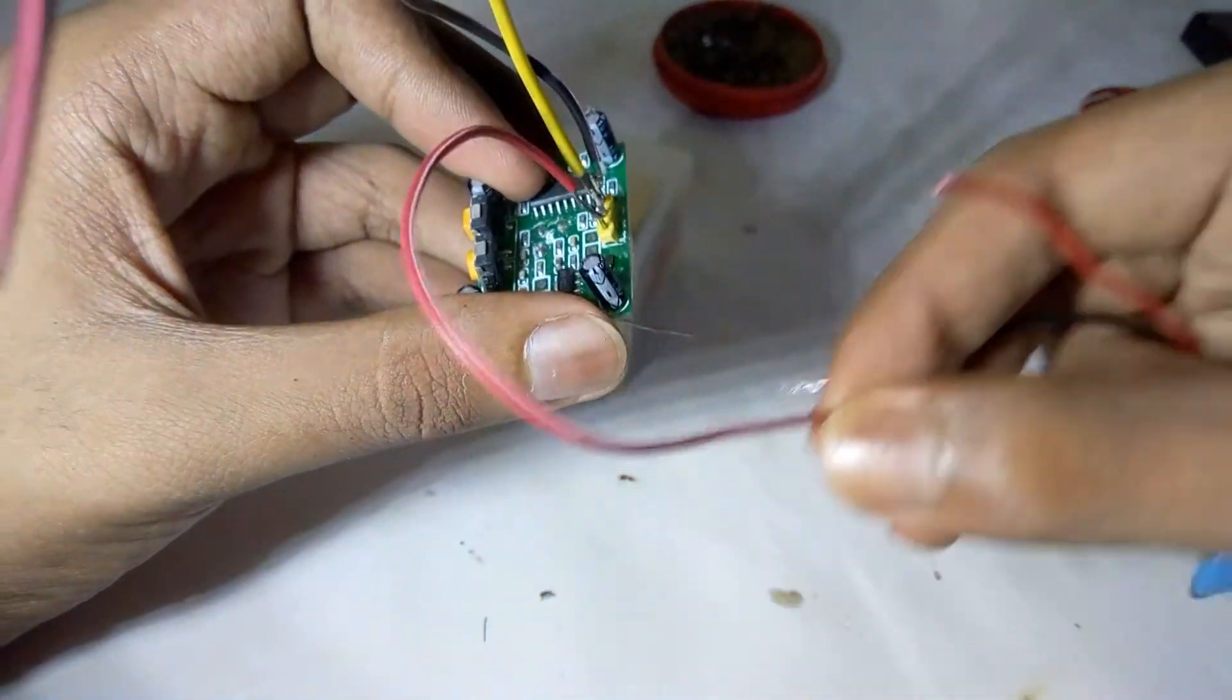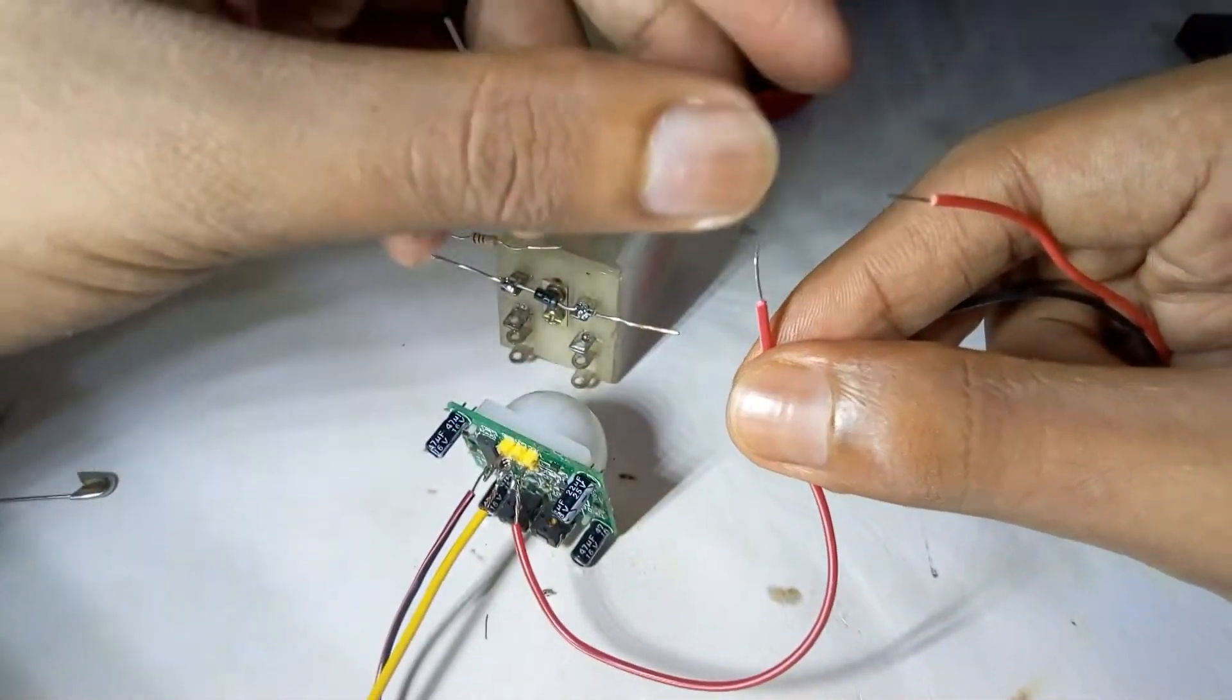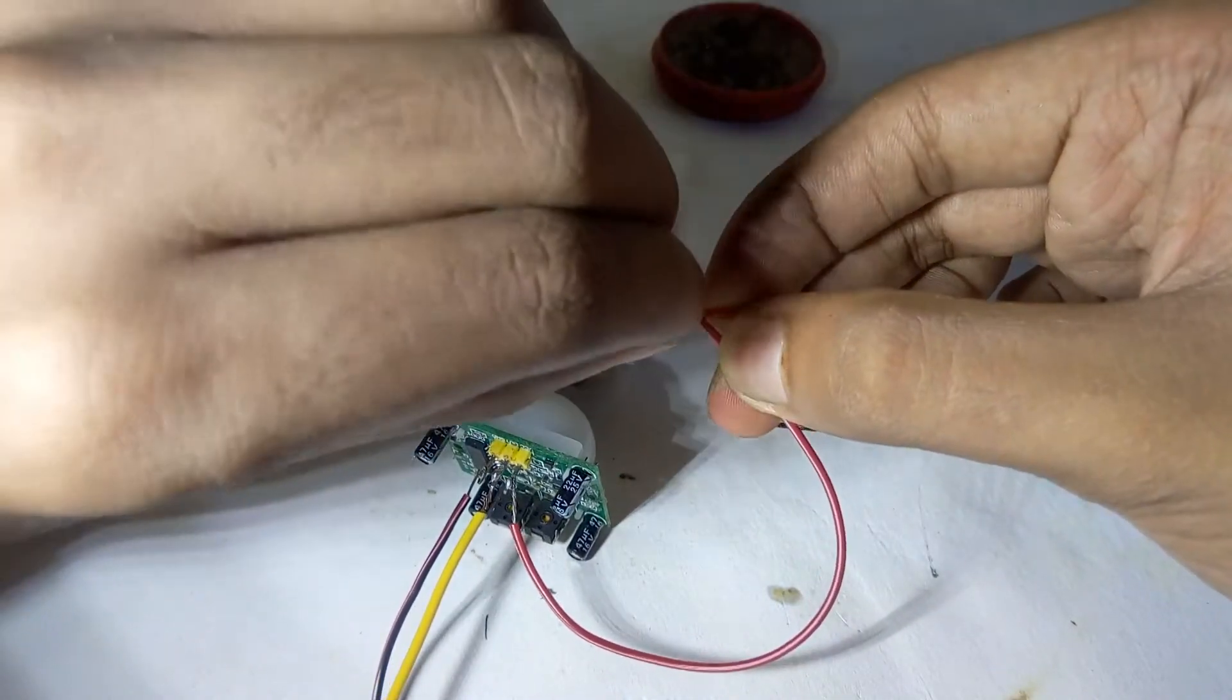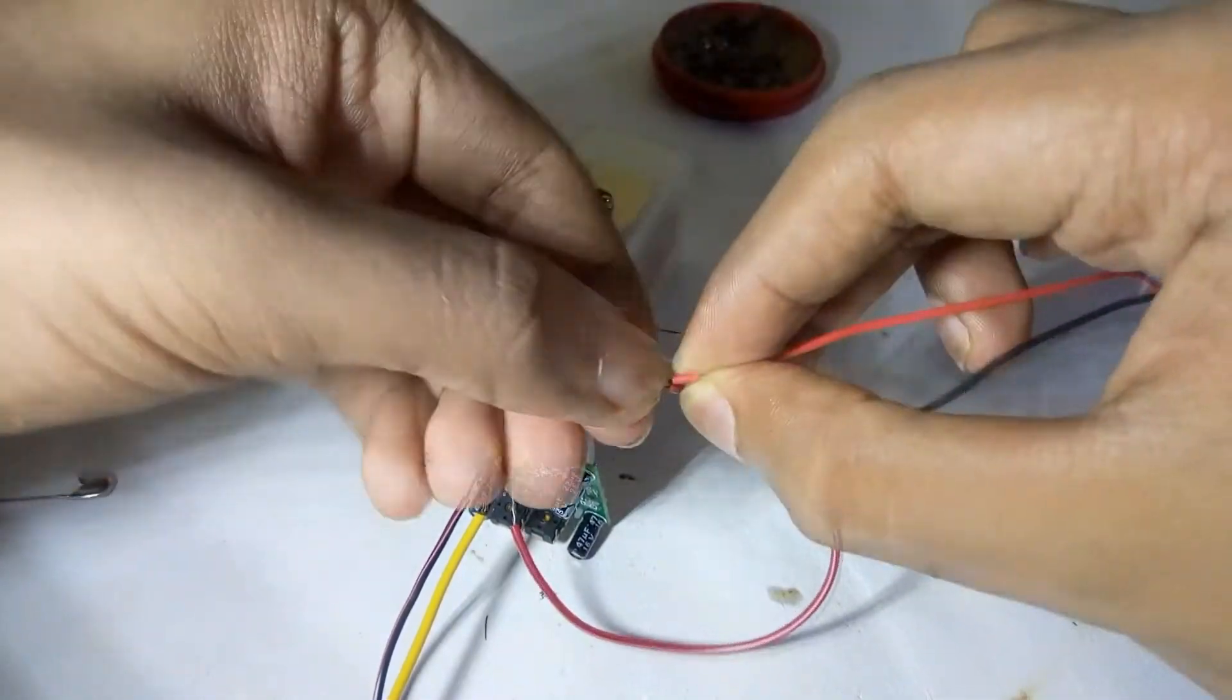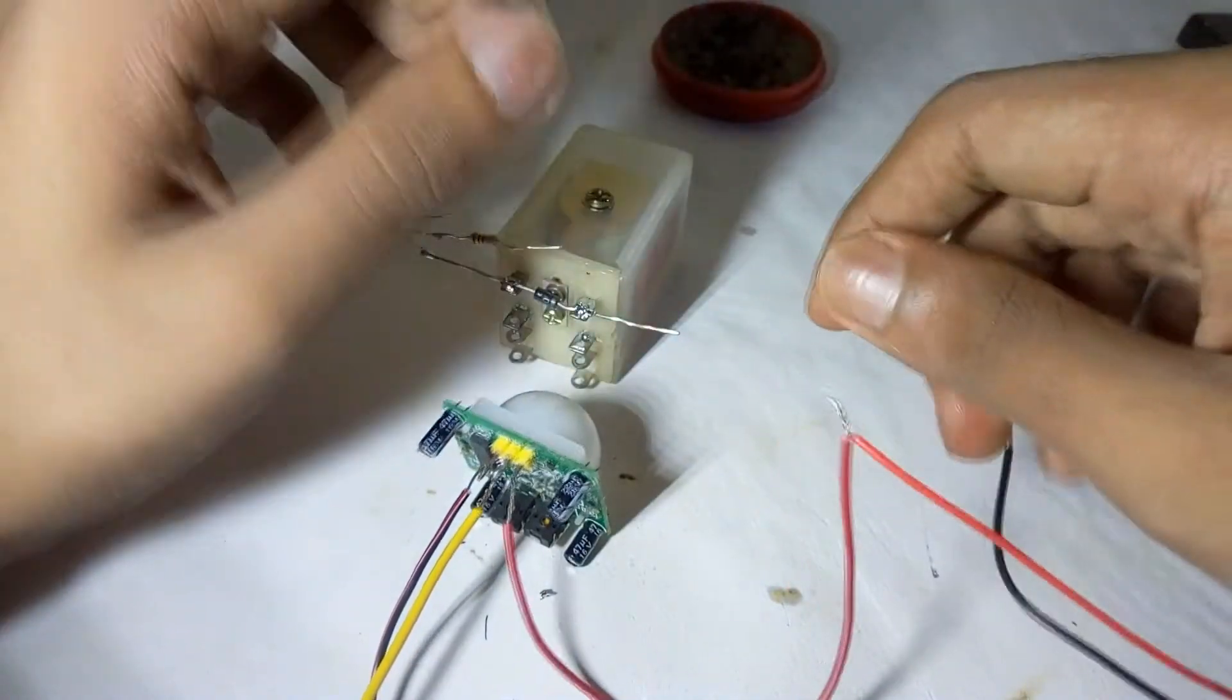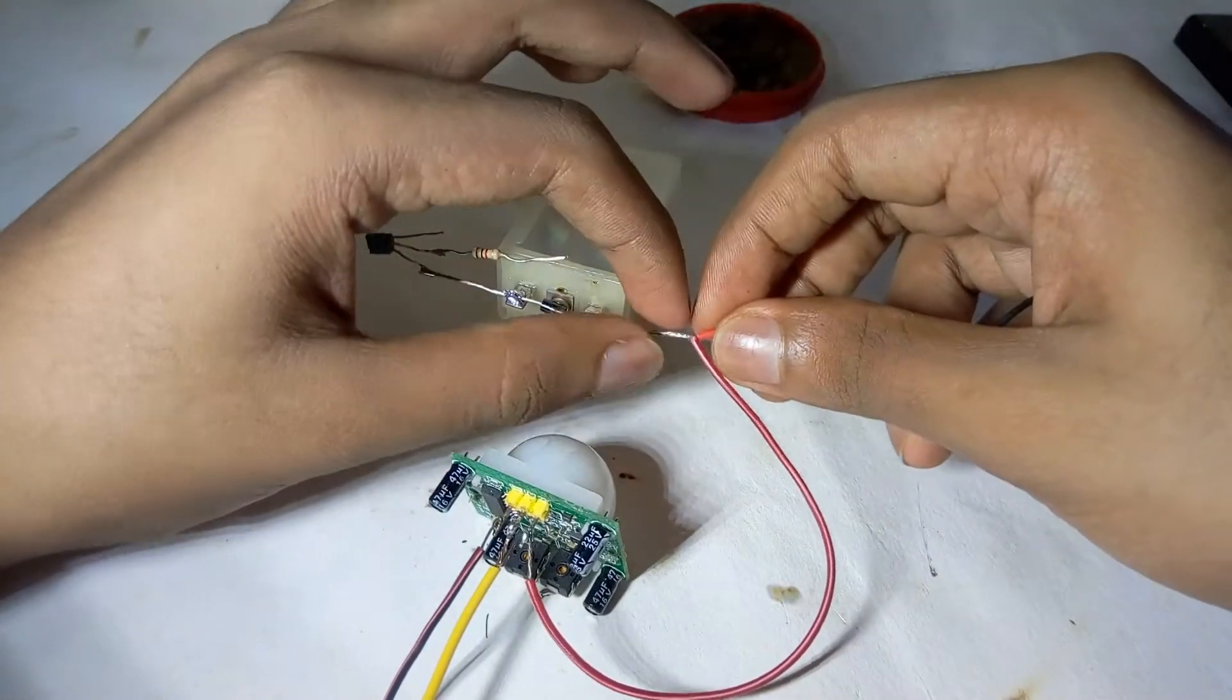Now this is the VCC of the PIR sensor. Join it with the battery's positive terminal, and join it to our diode as shown in our circuit diagram.